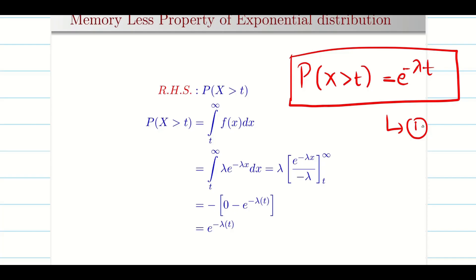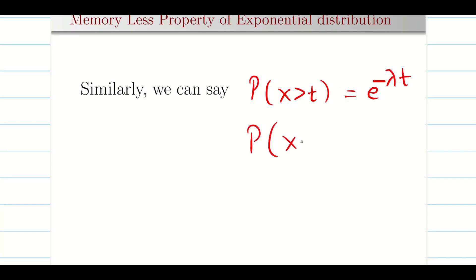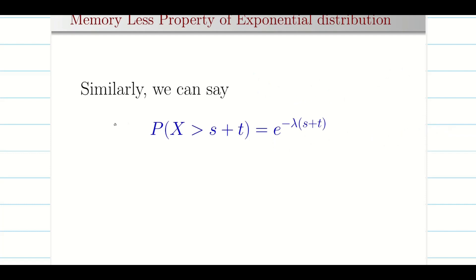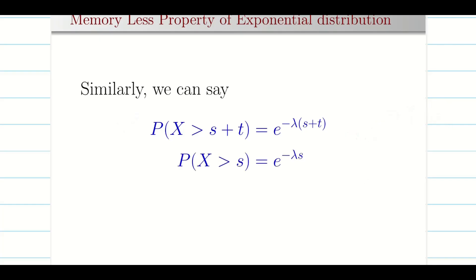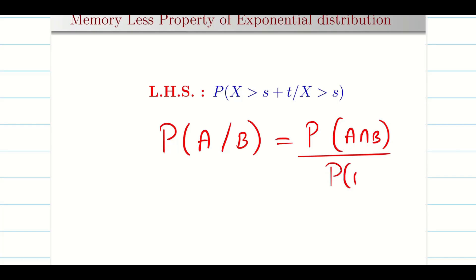Now the same thing we have to do for the LHS. If probability of x greater than t is e^(minus lambda t), I can put in any value. When t is greater than 0, for example probability of x greater than 10 is e^(minus 10 lambda). This is essential for the RHS result we have proved. Now we take the result for our LHS. In LHS we have s plus t, so probability of x greater than s plus t is simply e^(minus lambda(s+t)). Similarly, x greater than s means e^(minus lambda s). This is my LHS — it looks like conditional probability. We know that P(A given B) equals probability of A intersection B divided by probability of B.